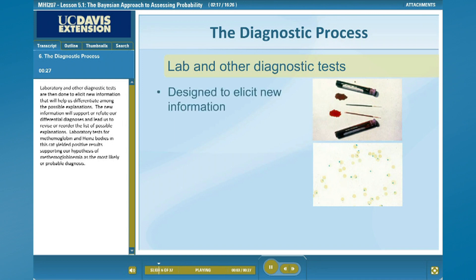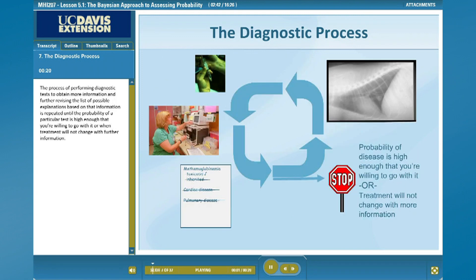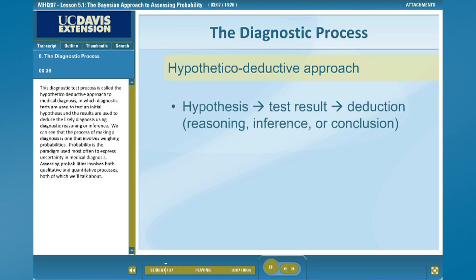Laboratory and other diagnostic tests are then done to elicit new information that will help us differentiate among the possible explanations. The new information will support or refute our differential diagnoses and lead us to revise or reorder the list. Laboratory tests for methemoglobin and Heinz bodies in this cat yielded positive results, supporting our hypothesis of methemoglobinemia as the most likely diagnosis. This process is repeated until the probability of a particular diagnosis is high enough, or when treatment will not change with further information. This is called the hypothetical deductive approach to medical diagnosis, in which diagnostic tests are used to test an initial hypothesis and the results are used to deduce the likely diagnosis using diagnostic reasoning or inference.